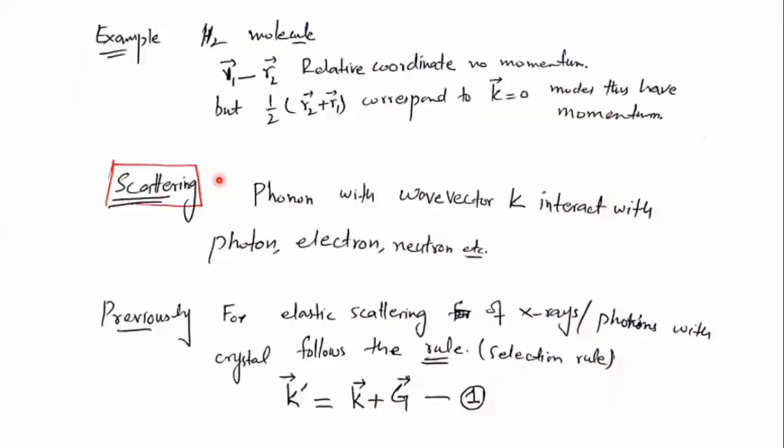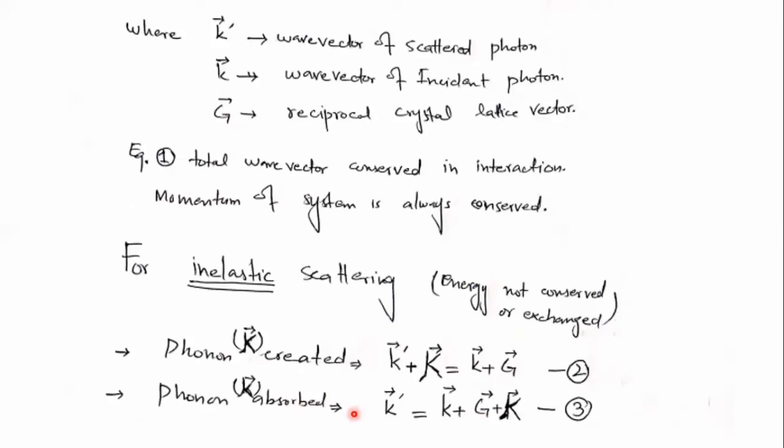Now in this equation, which is equation 1, it indicates that the scattered photon wave vector is equal to the incident wave vector plus G. So it's some kind of conservation of the wave vector. The wave vector itself is conserved, which indicates that the momentum of the system is always conserved.